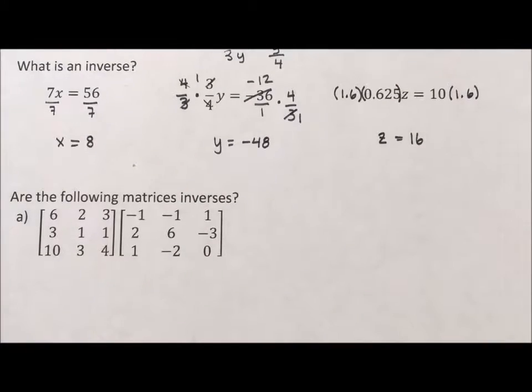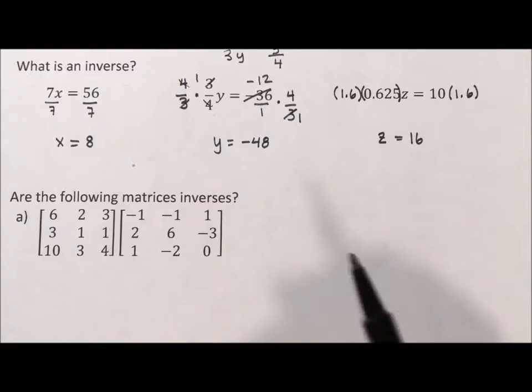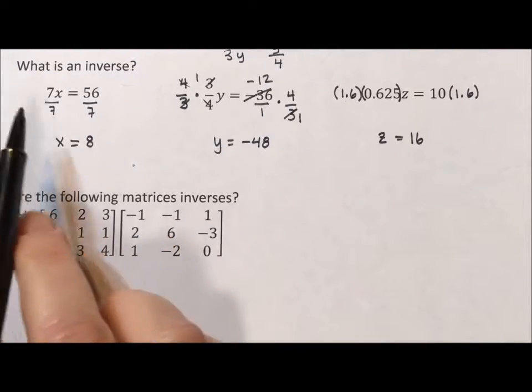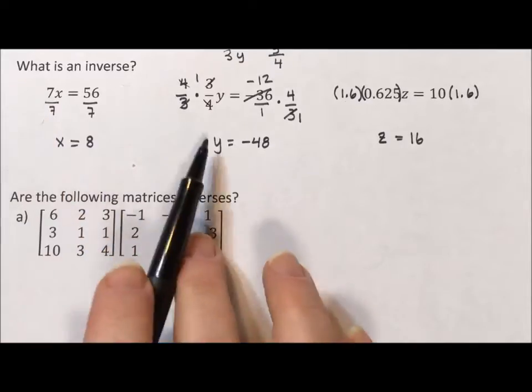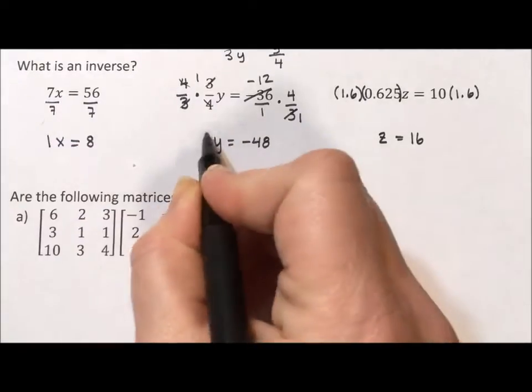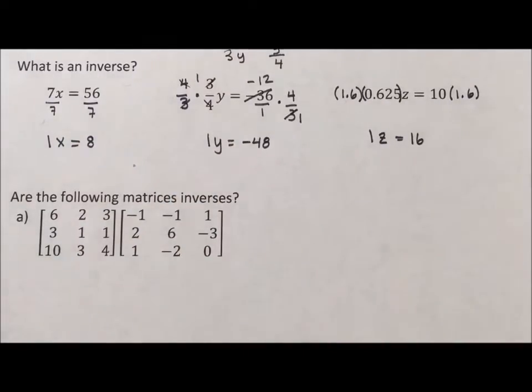Now that we have an idea of what an inverse is, let's talk about what it looks like with matrices. Here they multiply to be 1, giving us 1x, 1y, 1z. So to figure out if they're inverses, we need to multiply these matrices.